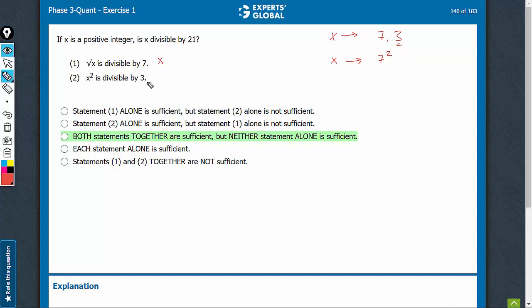Statement 2: x squared is a multiple of 3. Now, one may argue that means x is a multiple of root 3. That's correct. But since x is an integer, x cannot be something like 2 root 3. If x is a multiple of root 3, it has to be a multiple of 3 as well. Therefore, statement 2 suggests that x is a multiple of 3.